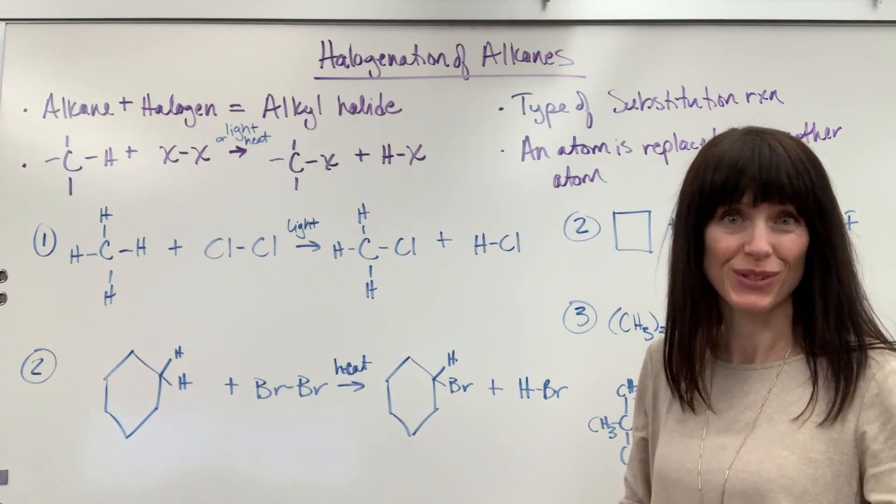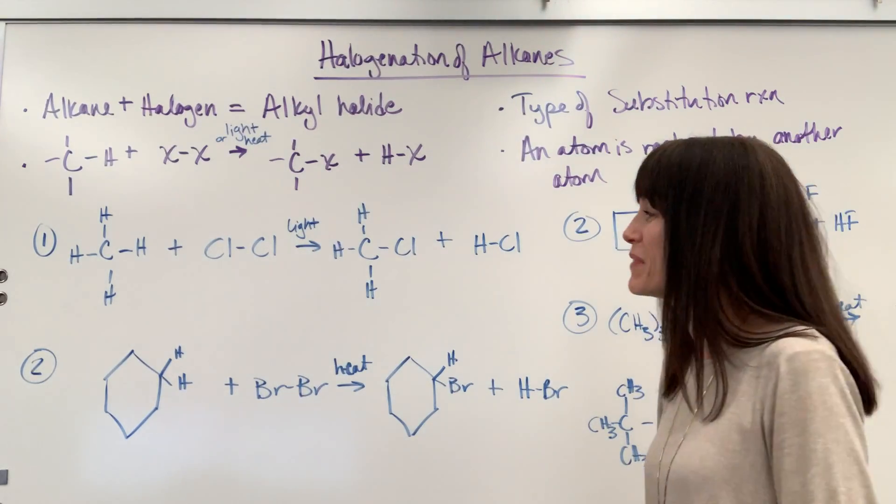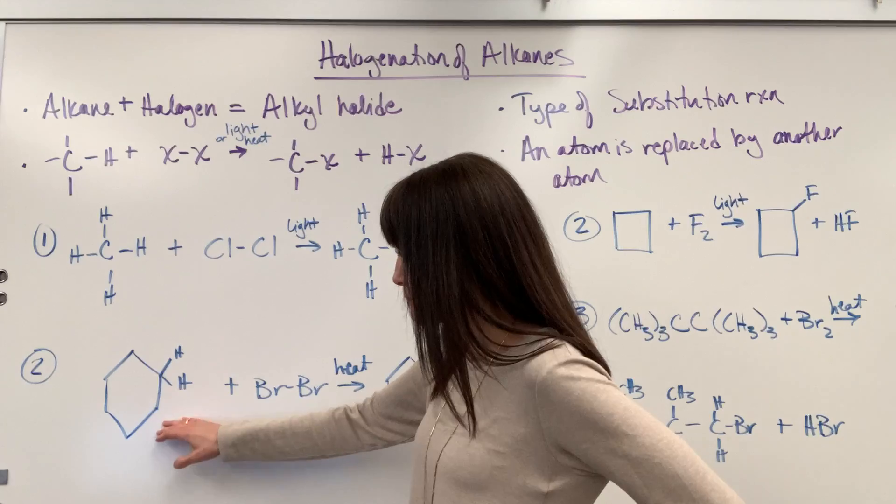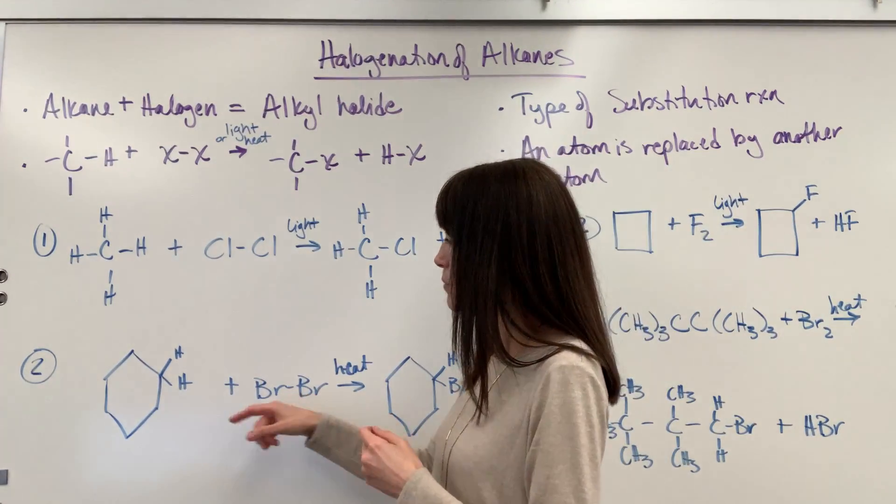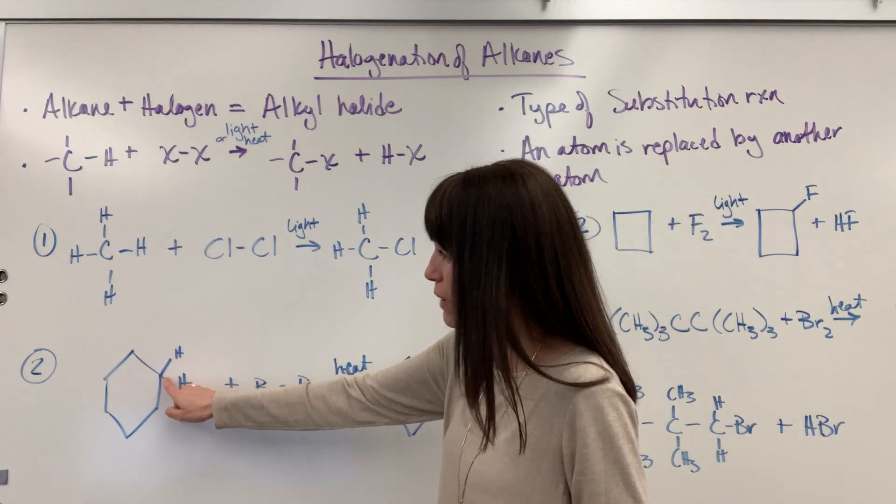Let's do a couple more examples just so that you get really comfortable with it. Here is a cyclohexane. Now to show exactly where hydrogens and the bromine are moving, I went ahead and I drew the two hydrogens.